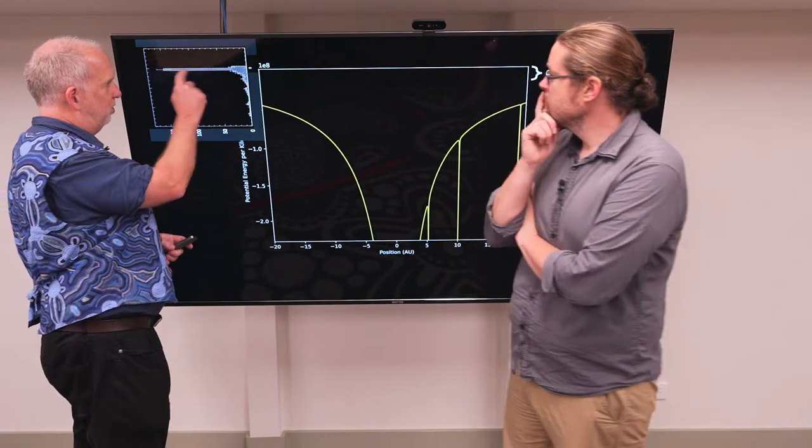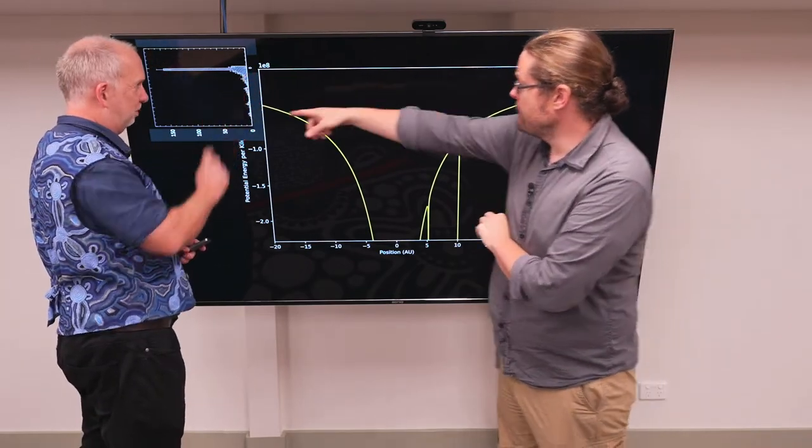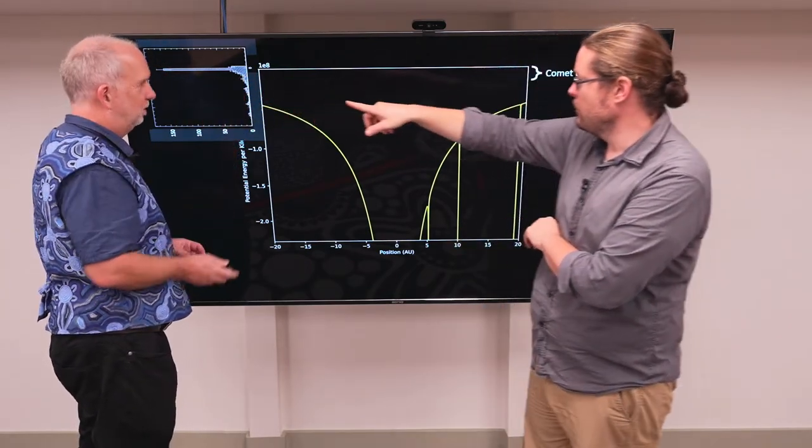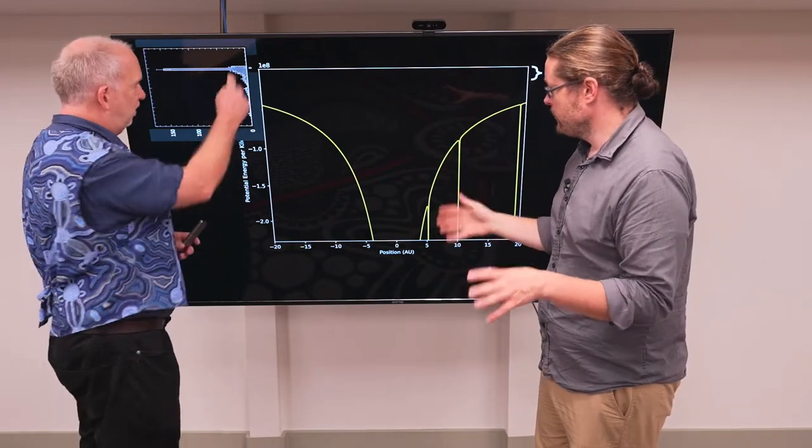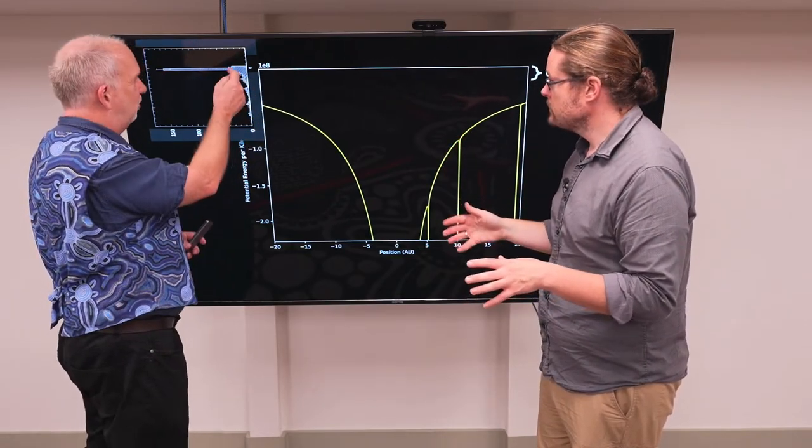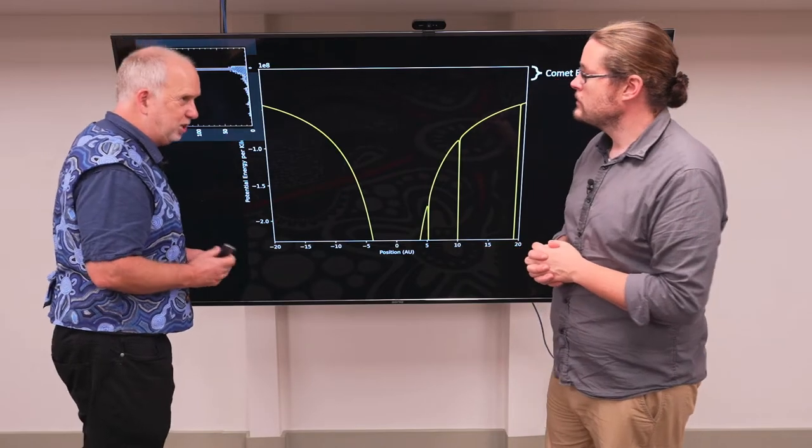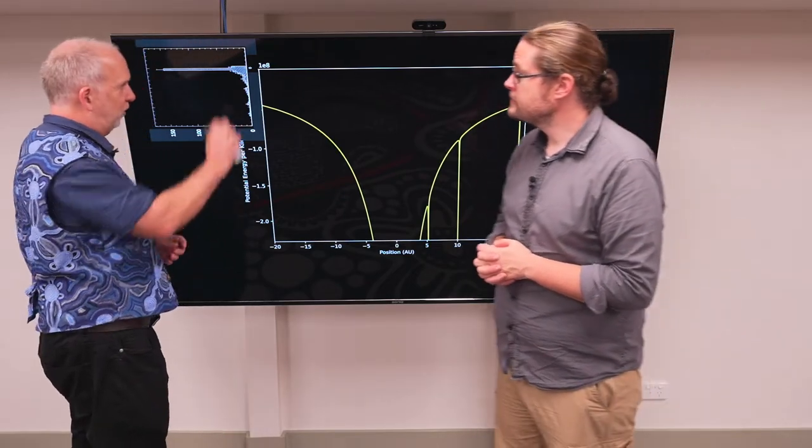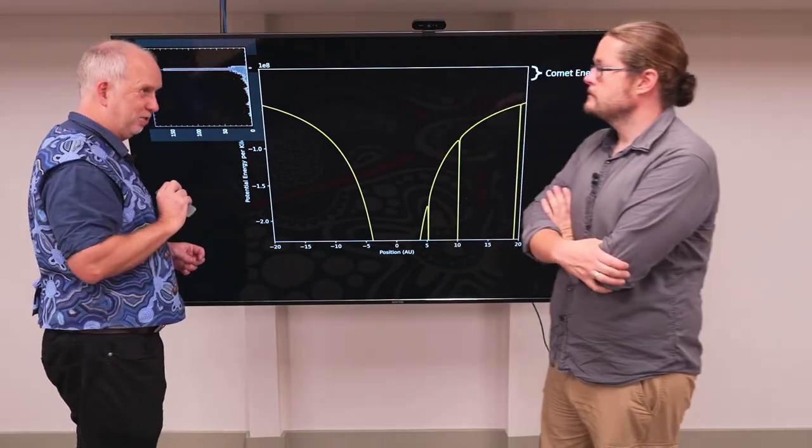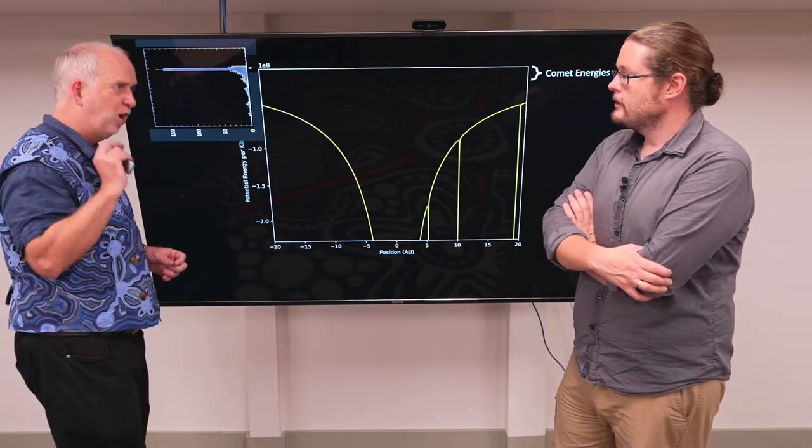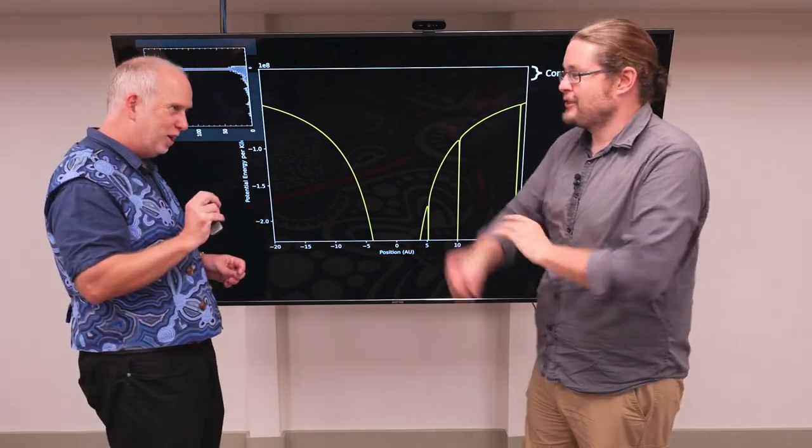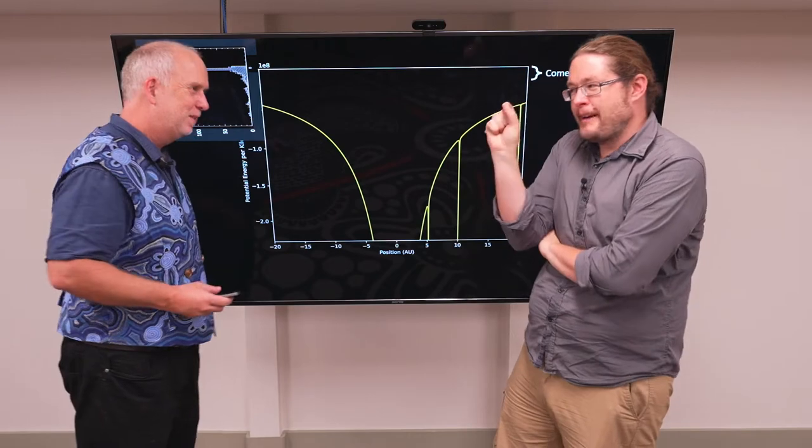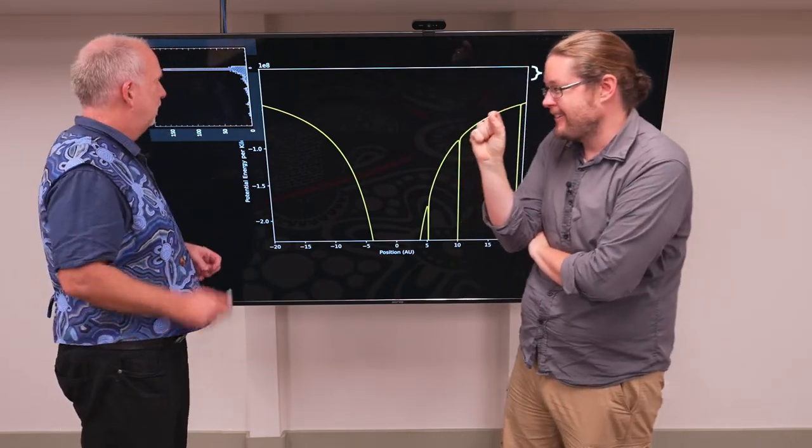So they all sit pretty damn close to zero. There's a few that are clearly negative, which means they will never be able to escape. So these are the ones that are trapped in elliptical orbits and these are the ones that are pretty close to zero. Now it turns out they're actually very slightly negative. Ever so slightly negative. So they are trapped. It's kind of like they've just barely scratched and got over the line.